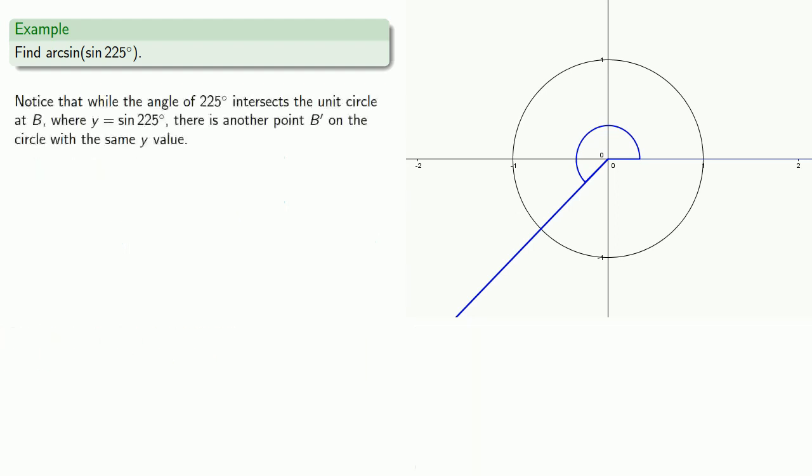So the thing to notice here is that while the angle of 225 degrees intersects the circle at B, where y is equal to sine of 225 degrees, there is another point B' on the circle with the same y value, and it's right here. Now it's useful to keep in mind that the reference angle for 225 degrees is 45 degrees, so we can rotate clockwise from the positive x-axis by 45 degrees to get to B'.